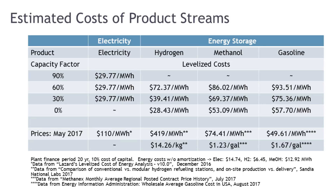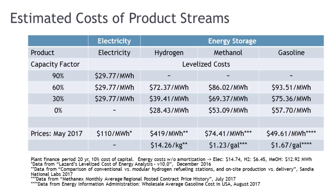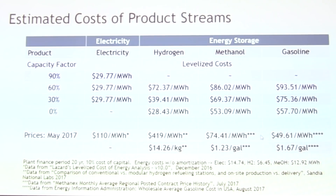This analysis uses the Thorcon economics published in their 2015 executive summary, assuming a 20-year finance period with 10% cost of capital, 3 cents per kilowatt hour of electricity as a primary product stream, and about 44% conversion efficiency. As you go down the capacity factors on the left — using less for electricity and more for chemical energy storage — compared to even $40 per barrel oil prices, you can make methanol basically at parity. You can get back to parity with current gasoline prices even running your plant for fuel production.